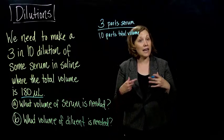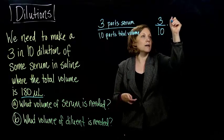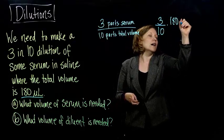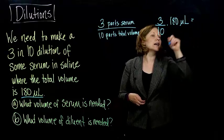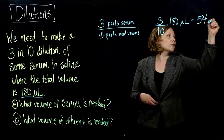So how do you find 3 tenths of 180? Well, you multiply, of course. So 3 tenths times 180 microliters, and when we do the math here, we end up with 54 microliters.